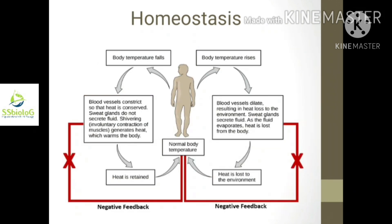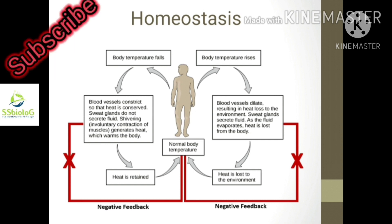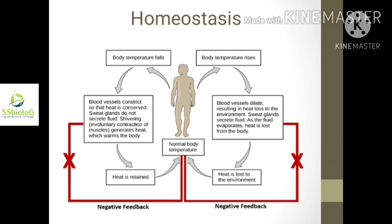The next character is homeostasis. The internal mechanisms of an organism can function within a particular temperature range, called the optimum temperature range, which varies from organism to organism. Living organisms can regulate their internal environment to maintain the relatively narrow range of conditions needed for cell function. For example, the human body temperature needs to be kept relatively close to 37 degrees centigrade.